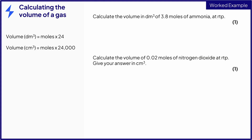To calculate the volume of a gas, we can use the molar gas volume. As the question refers to RTP, you know that the molar gas volume is 24 decimetres cubed per mole. In this first question, the units of volume that you need to calculate are decimetres cubed, so the correct version of the equation is this. Substitute the value of the number of moles of ammonia into the equation to calculate the volume in decimetres cubed.